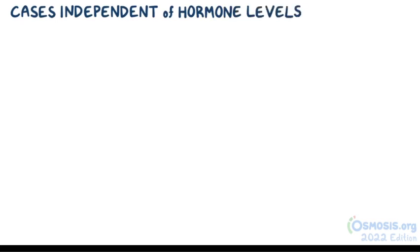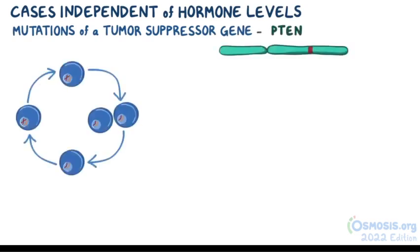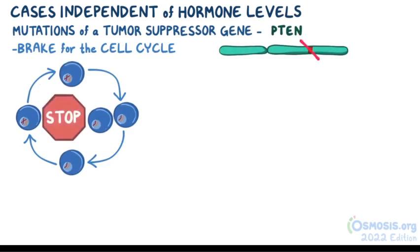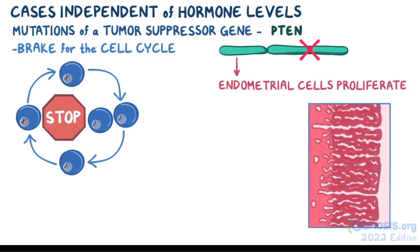Certain cases of endometrial hyperplasia can occur independent of estrogen and progesterone levels. These cases are often associated with mutations of a tumor suppressor gene called PTEN, which normally acts like a brake on the cell cycle. When this gene becomes defective, cells in the endometrium grow and proliferate out of control, leading to hyperplasia.